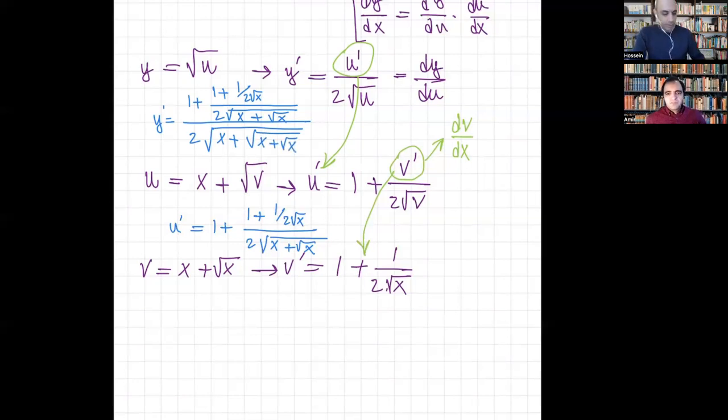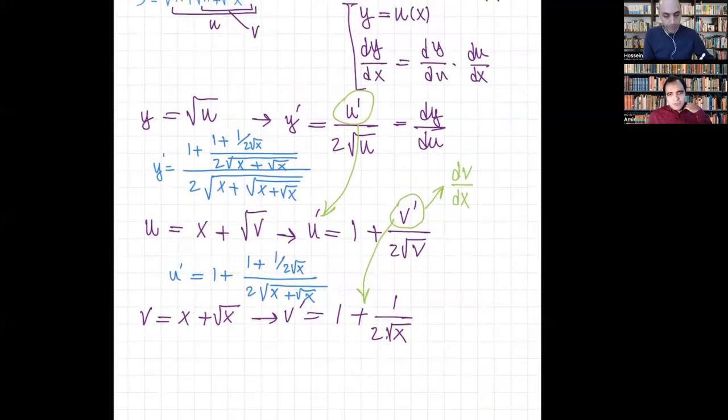Yeah, that's correct. That's a good approach, actually, to substitute back all the terms to obtain dy over dx. So that y prime is dy over dx. So you can actually highlight that term as the final solution. And yeah, thank you for solving that.